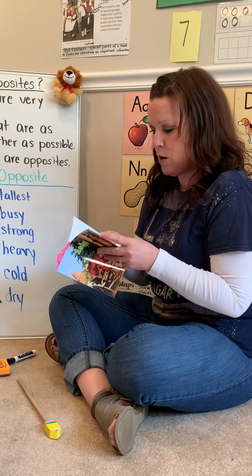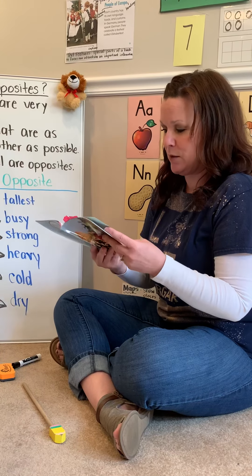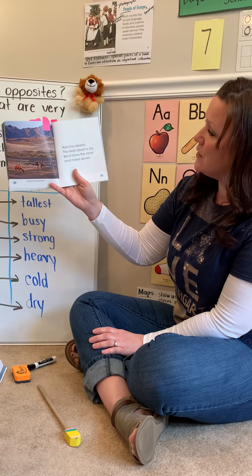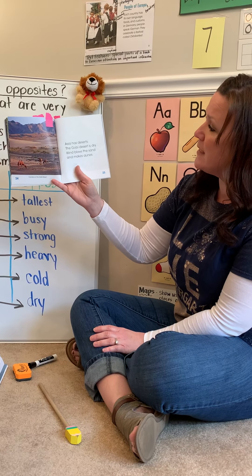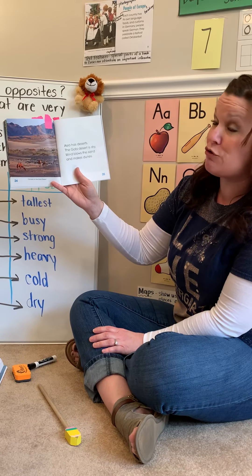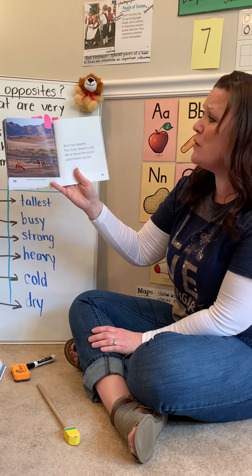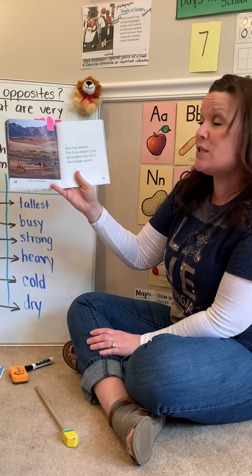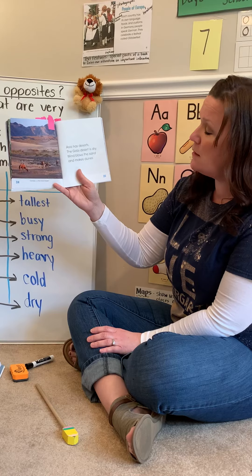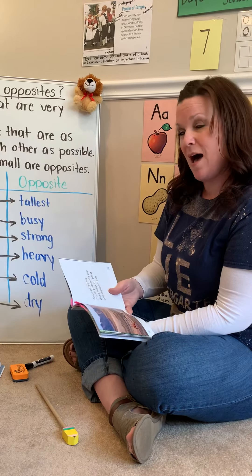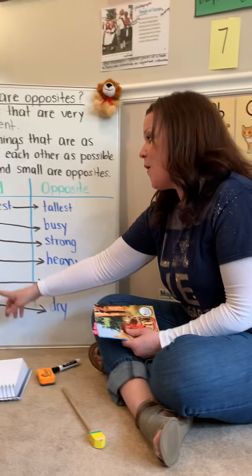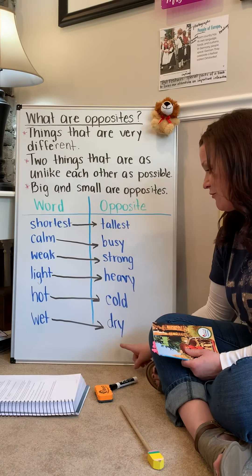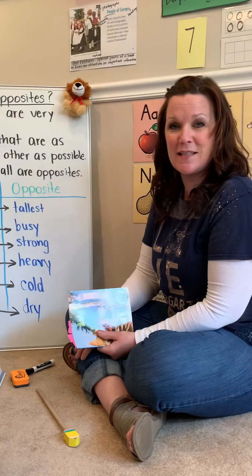Let's go to the desert page. Asia has deserts. The Gobi Desert is dry. So she uses the word dry to describe the desert. What's the opposite of dry? Wet. Wet, dry — they are opposites.